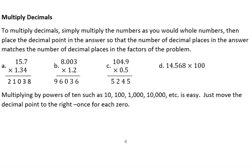To multiply decimals, simply multiply the numbers as you would whole numbers. Then place the decimal point in the answer so that the number of decimal places in the answer matches the number of decimal places in the factors of the problem. Remember, factors are the things that we're multiplying.